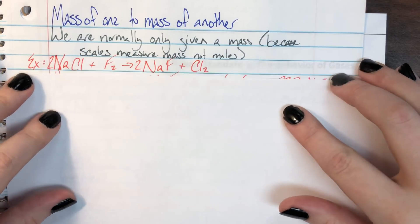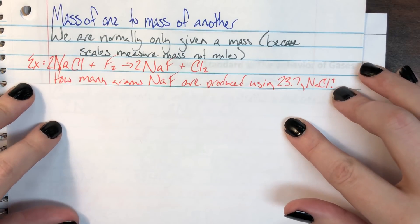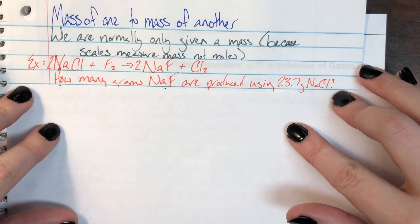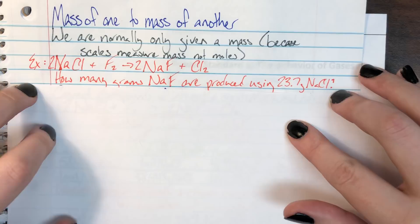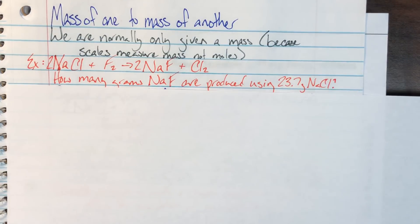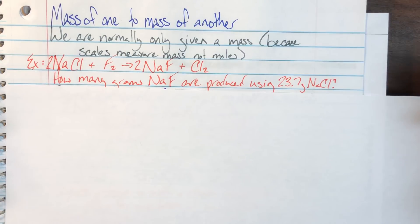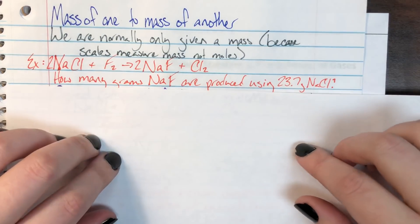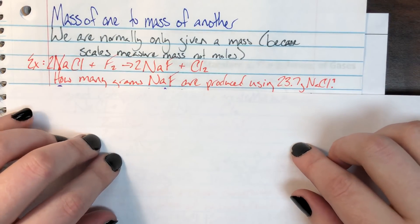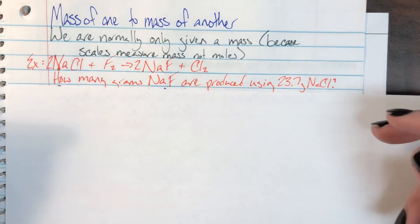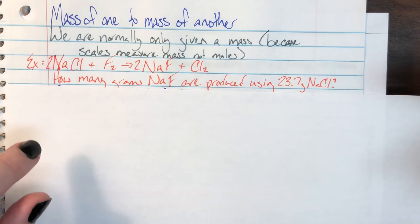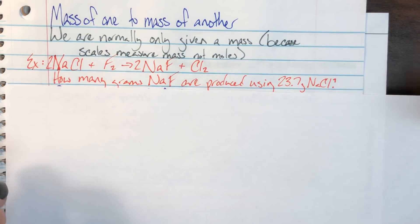We're going to go ahead and look at an example problem. As you can see, I already have a balanced chemical equation, because I know I'm going to be going between two different compounds that are related to each other. The problem says: how many grams of sodium fluoride are produced using 23.7 grams of sodium chloride?